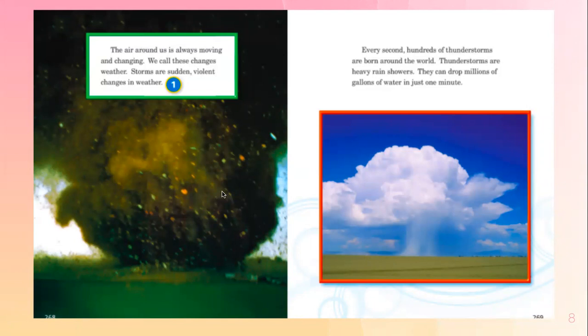Every second, hundreds of thunderstorms are born around the world. Thunderstorms are heavy rain showers. They can drop millions of gallons of water in just one hour.